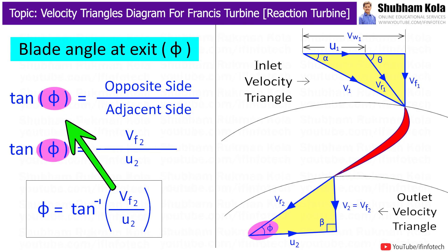And to calculate blade angle at exit that is phi we are applying the equation of tan phi which is opposite side by adjacent side where opposite side is Vf2 upon adjacent side u2. So, by using all these equations, we are able to solve the problems on Francis turbine.